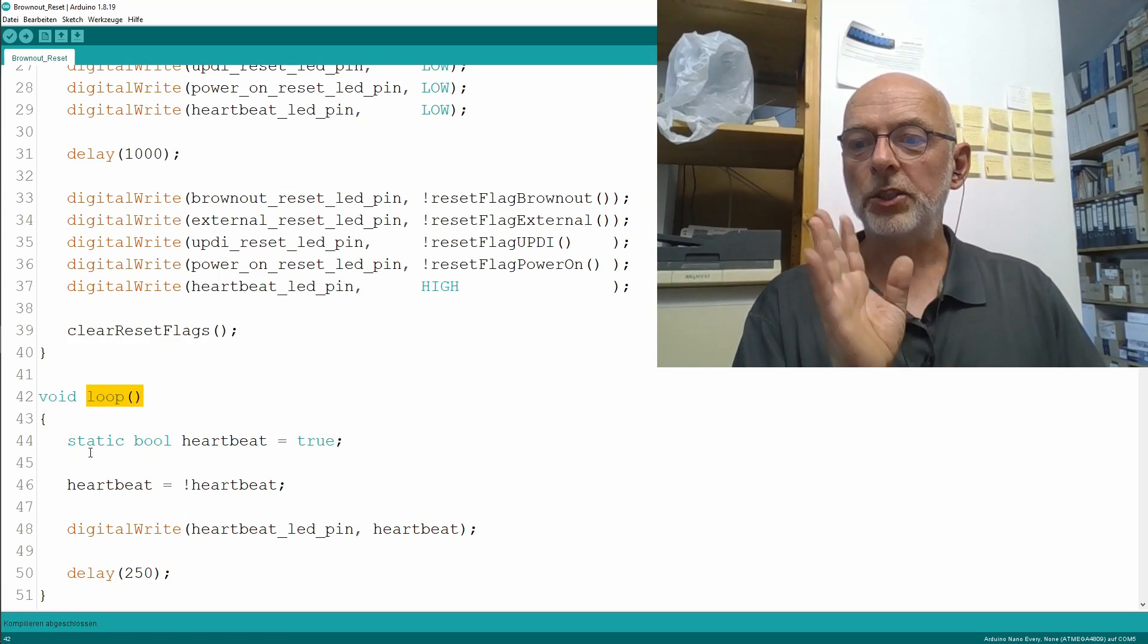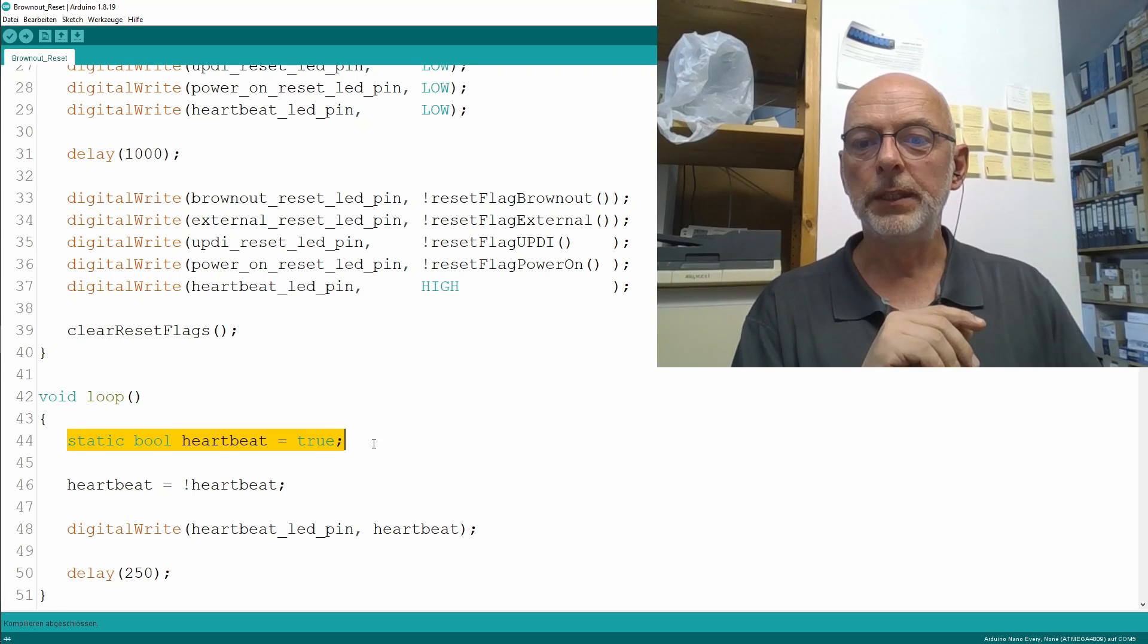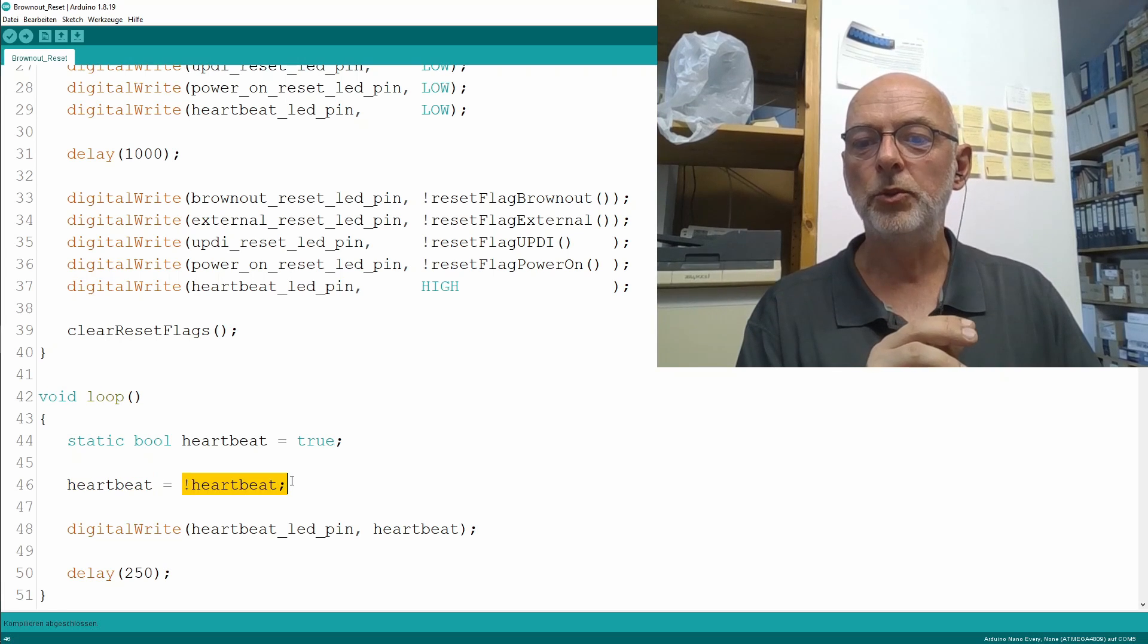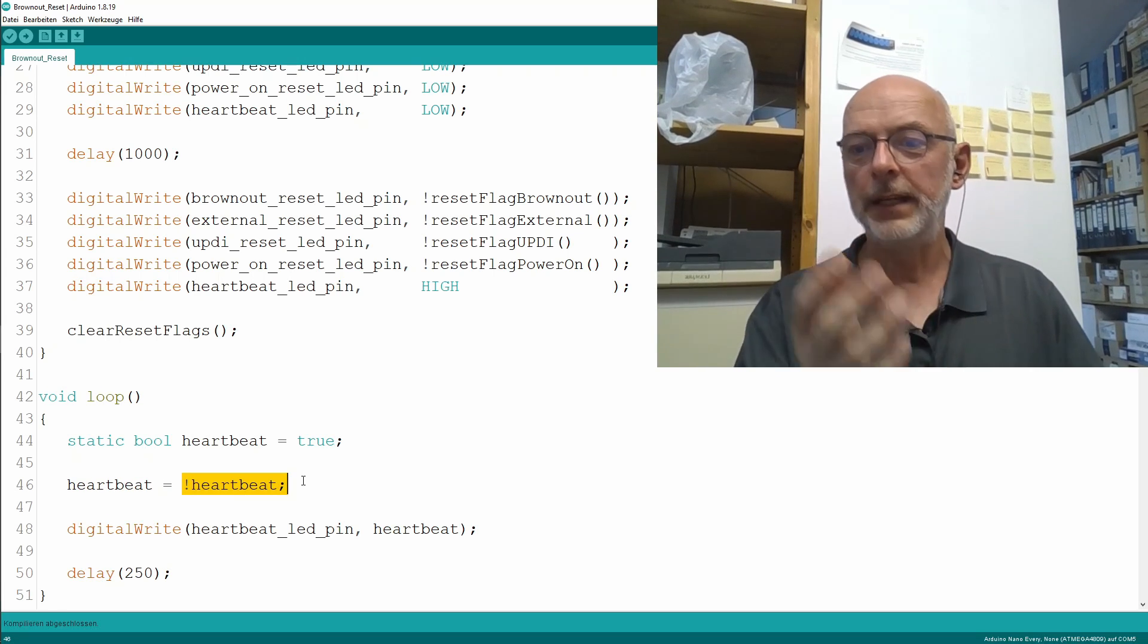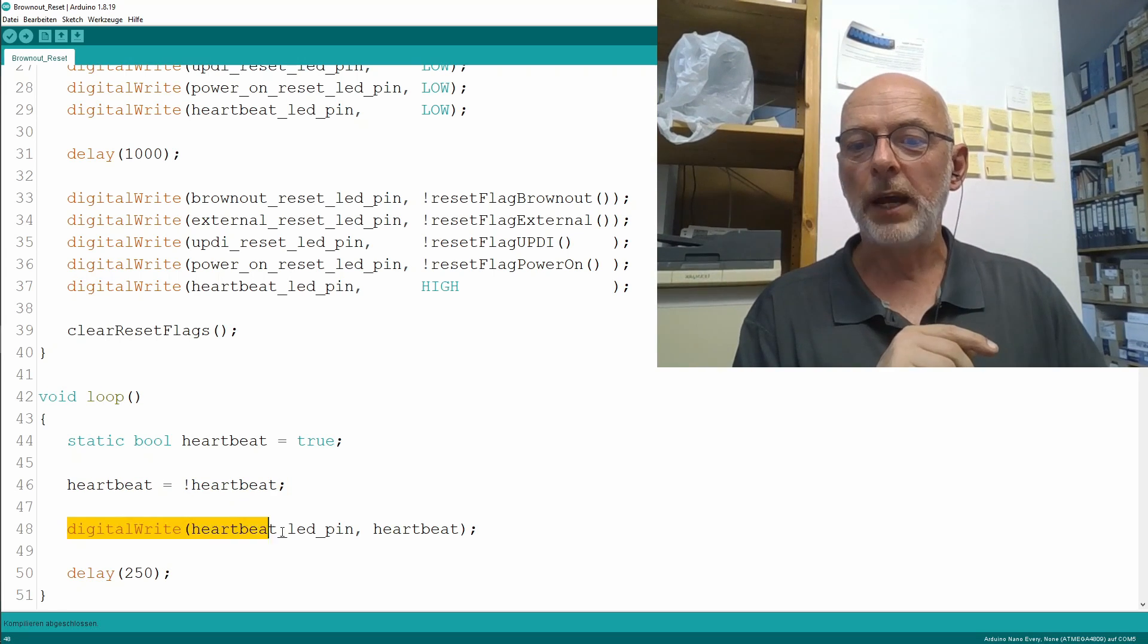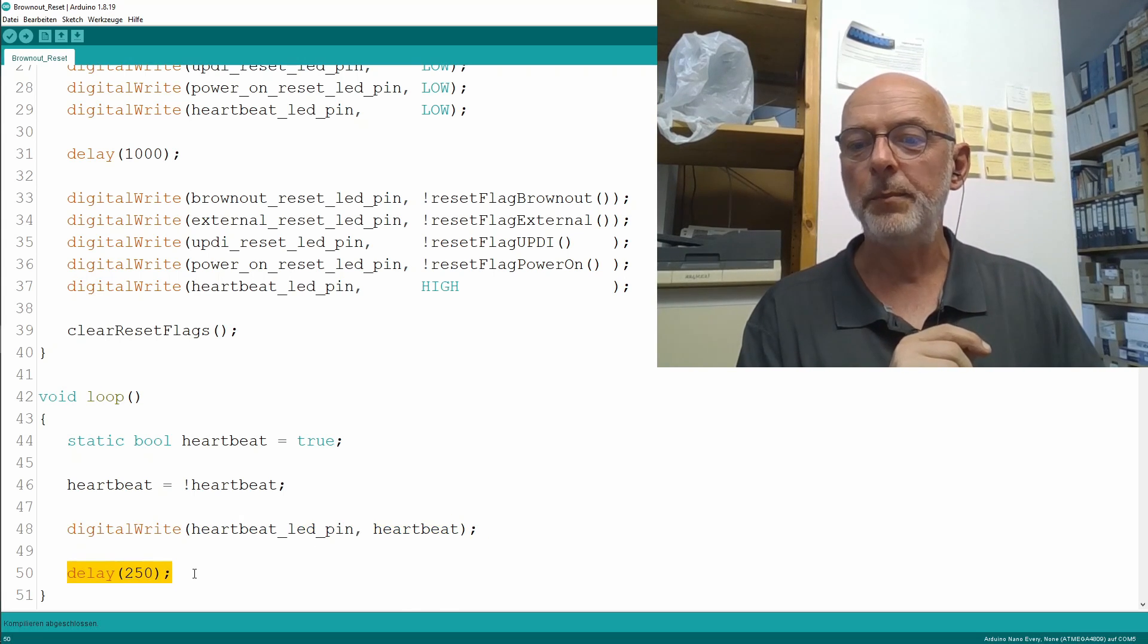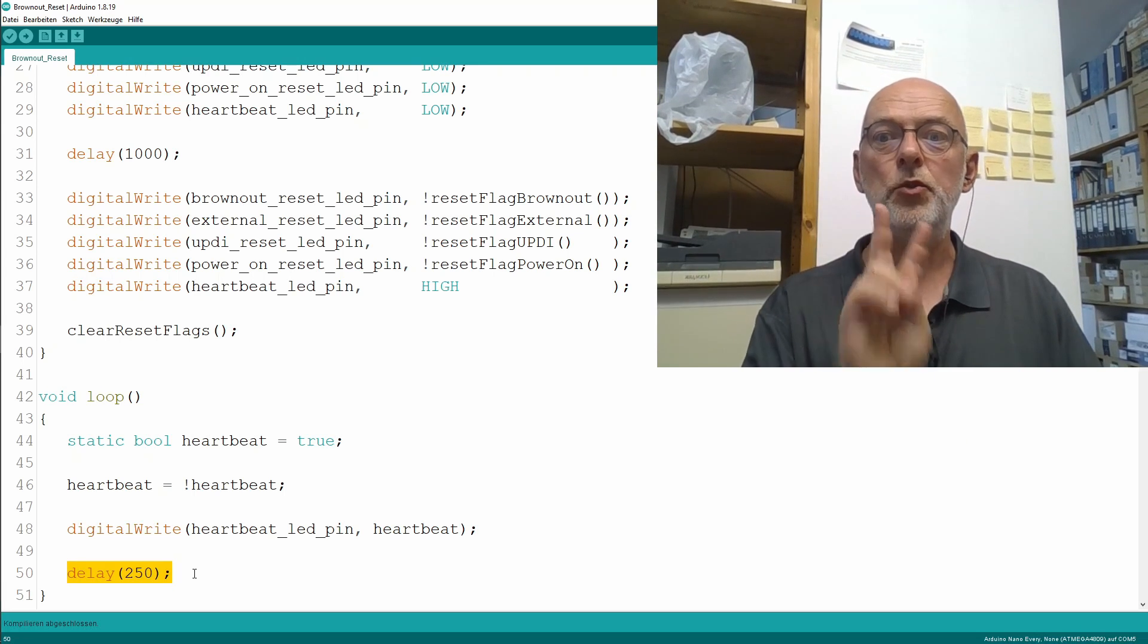In the loop I just have here my static boolean heartbeat which I initialize to true. Every time we go into the loop, heartbeat equals not heartbeat, so toggling it around. I write that to my heartbeat pin and I wait 250 milliseconds in each loop, so I'm blinking my heartbeat pin at approximately 2 hertz.